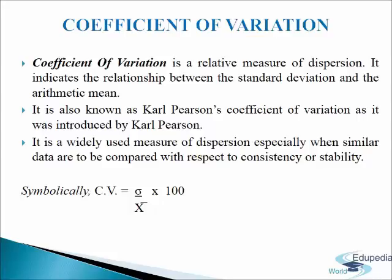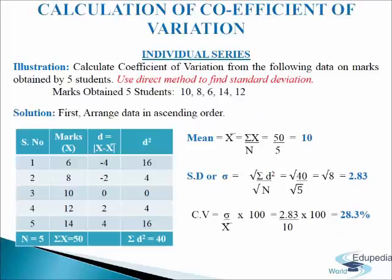Now we will see how coefficient of variation is calculated. Let us understand it with the help of the following illustration. We have to calculate coefficient of variation from data on marks obtained by five students using the direct method to find standard deviation in individual series. The marks obtained by five students are 10, 8, 6, 14 and 12.